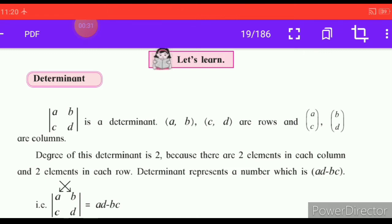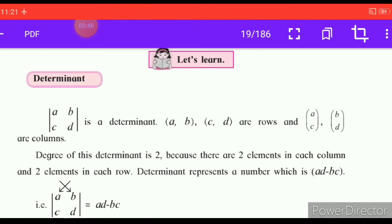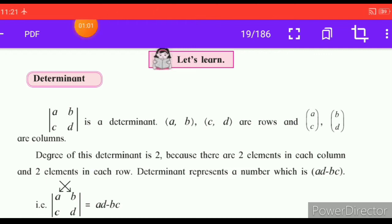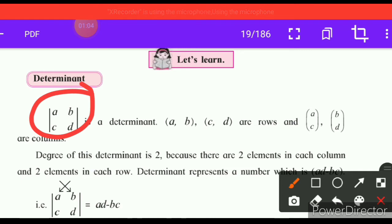The determinant of matrix [a, b; c, d] — rows are written as bracket a, b comma and bracket c, d. Columns are bracket a, c and bracket b, d. This matrix has two rows and two columns with four elements a, b, c, d.